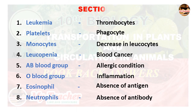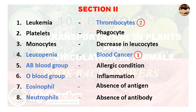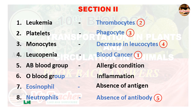Match the following, Section 2: Leukemia — Blood cancer; Platelets — Thrombocytes; Monocytes — Phagocyte; Leukopenia — Decrease in leukocytes; AB blood group — Absence of antibody; O blood group — Absence of antigen; Eosinophil — Allergic condition; Neutrophils — Inflammation.